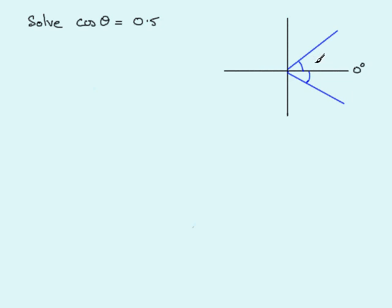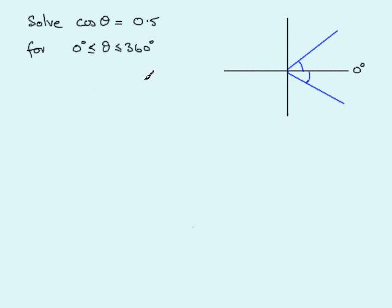All that needs to be done is to find theta in a given range. A common range is to solve for theta between 0 and 360 degrees. So I'm going to show you how to solve cos theta equals 0.5 for theta in the range 0 degrees to 360 degrees.